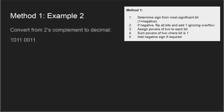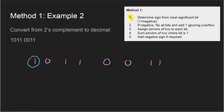Moving on to example two, still using method one. Our number is 1011 0011. Step one: determine sign from the most significant bit. The leftmost bit is one, which means we are working with a negative number.